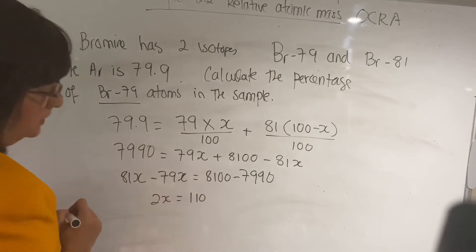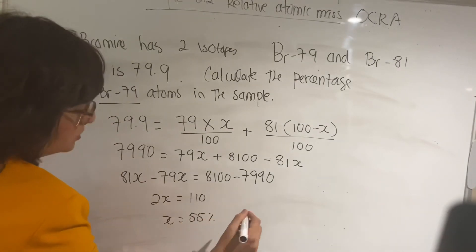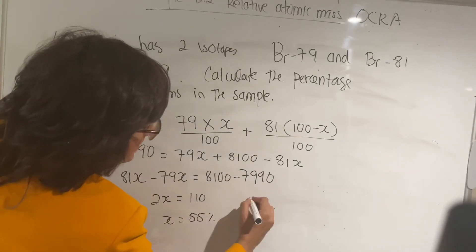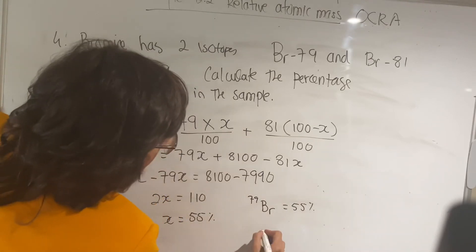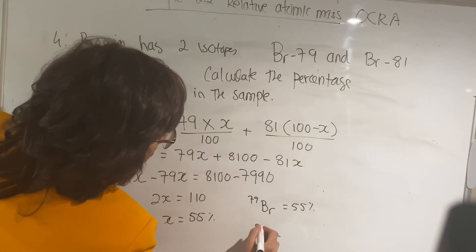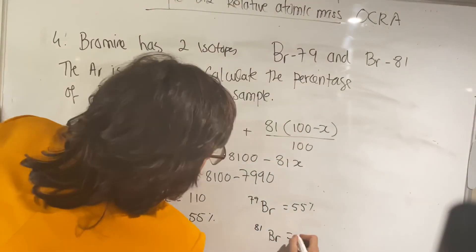Equals to 8,100 minus 7,990. So this is going to be 2x equals to 110 and x equals to 55. So isotope Br-79 is 55%, therefore isotope Br-81, which is 100 minus 55, gives you 45%.